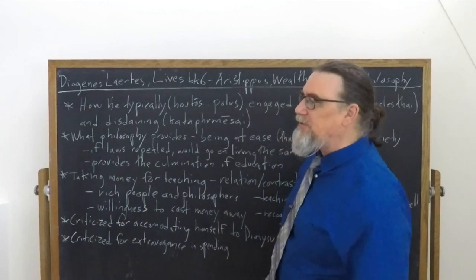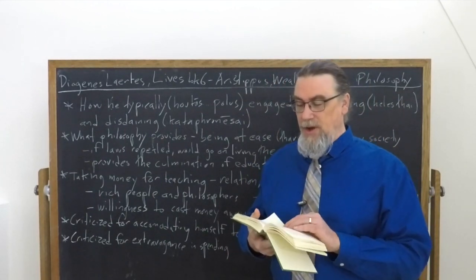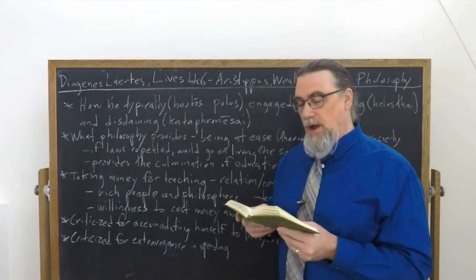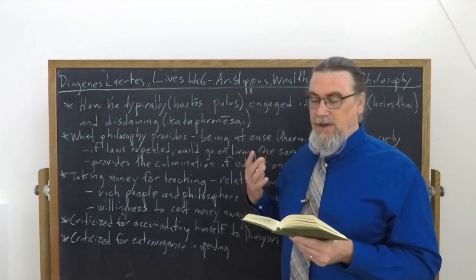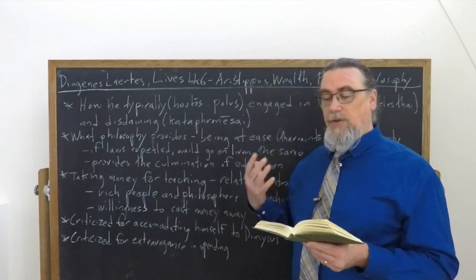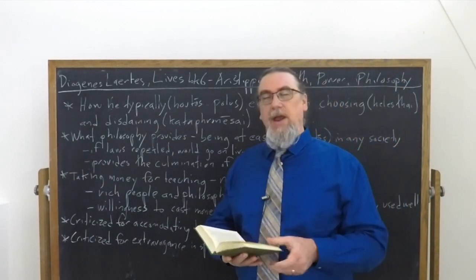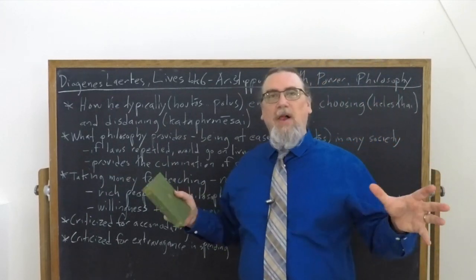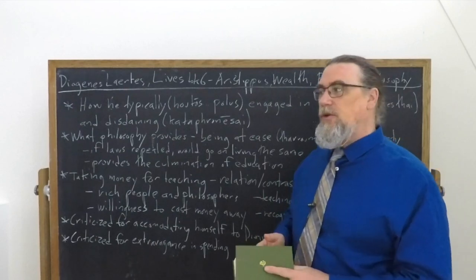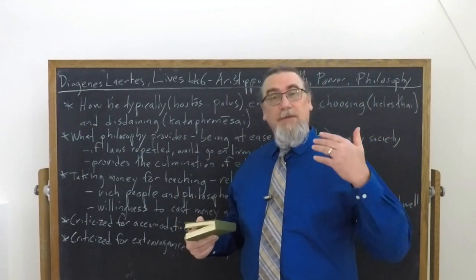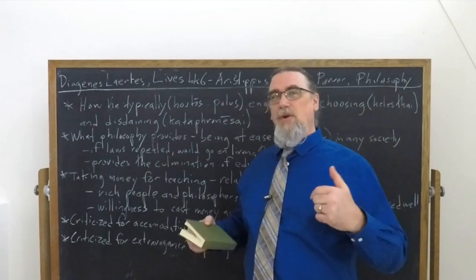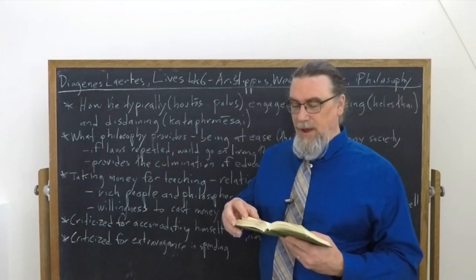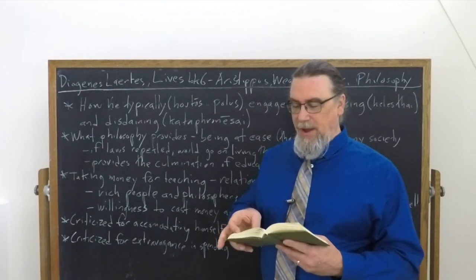He also has a few remarks about philosophy as being the culmination of education. And before that, he's asked, how do the educated, those who've undergone some sort of development, how do they differ from the uneducated? He says, well, just like horses that have been trained differ from untrained horses. So the horses that are untrained are just following their instincts. Those that are trained can actually do something different. And if they're educated in the right way, they can be their own masters.